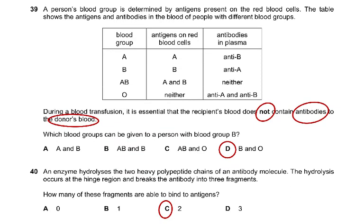Question 39: A person's blood group is determined by antigens present on the red blood cells. The table shows the antigens and antibodies in the blood of people with different blood groups. During a blood transfusion, it is essential that the recipient's blood does not contain antibodies to the donor's blood. Which blood groups can be given to a person with blood group B? The answer is B and O. O is the universal donor because O blood cells have no antigens on the red blood cells.